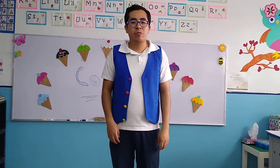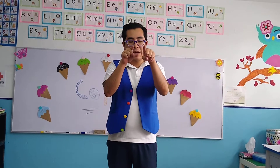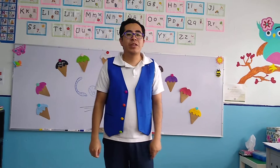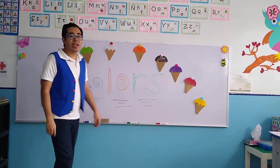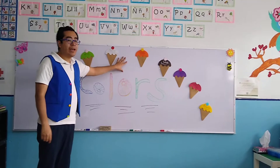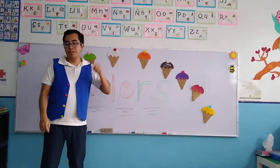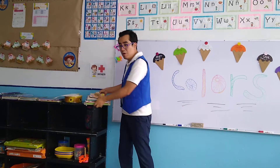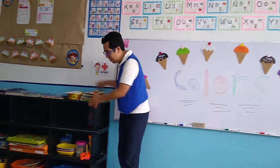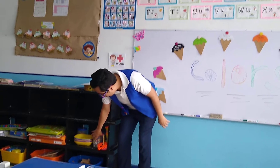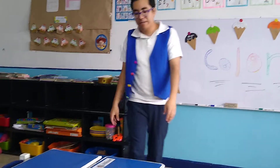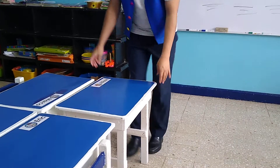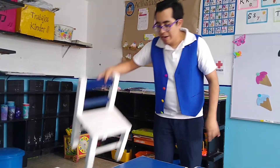A classroom is the place where the students — you guys — have your activities. Now, in a classroom, we have objects like a whiteboard, we have some books, beautiful books, we have toys like the ones that I have here, we have tables, and we have chairs.